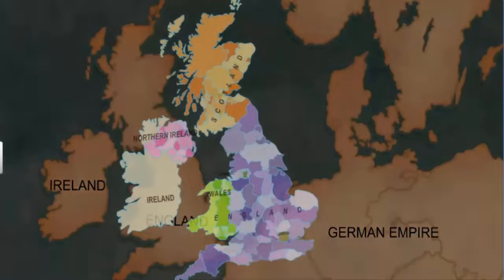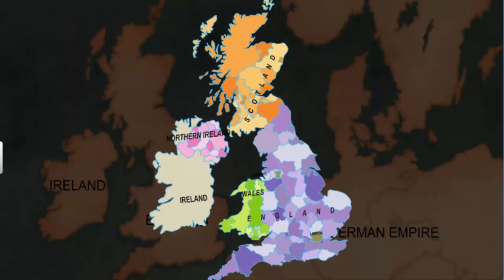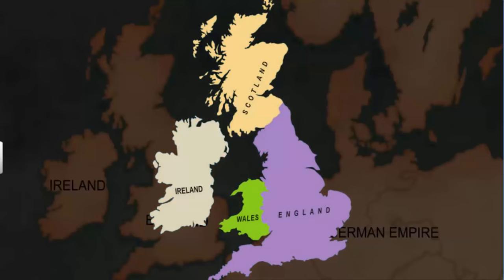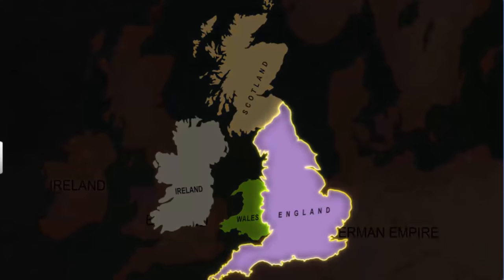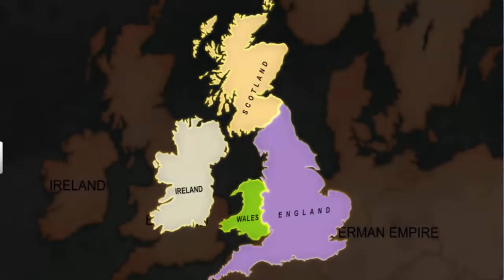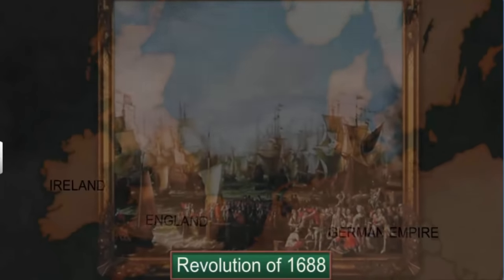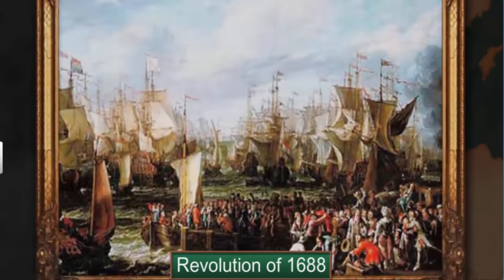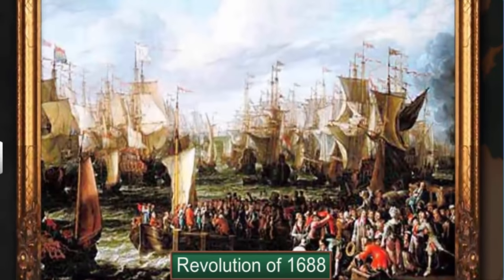In Britain, the formation of a nation-state did not happen due to a sudden upheaval or revolution like the other parts of Europe. Rather, it was the result of a long drawn-out process. The British Isles was inhabited by ethnic groups such as the English, Welsh, Scots, and Irish. These groups had their own cultural and political traditions. The concept of nation-states with England as the centre came about in 1688 after the parliament snatched power from the monarchy.